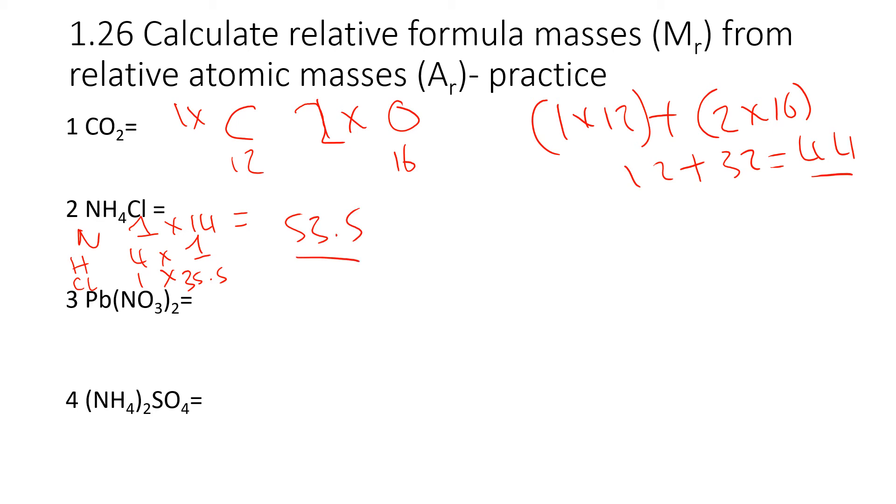For this next one, we have Pb, which is lead. We have nitrogen and we have oxygen. We have one lead. We have two nitrogens because there's one nitrogen inside the bracket, but it's multiplied by two from outside the bracket. We have three oxygens inside the bracket. So we multiply that by two to give us six. Now we just need to multiply each one of those by the individual masses and add them up. Pb is 207. Nitrogen is 14. And oxygen is 16. When you multiply those up and add them together, you should get 331.